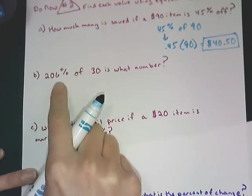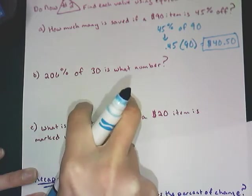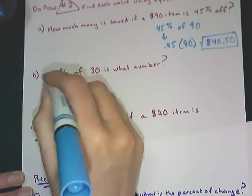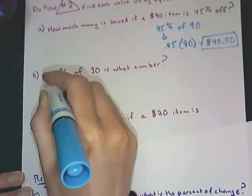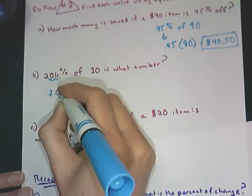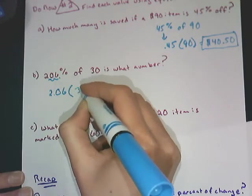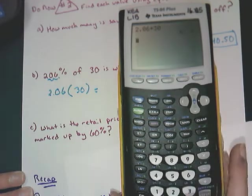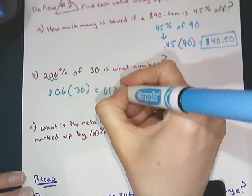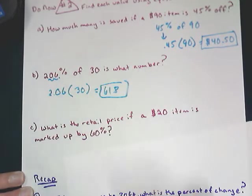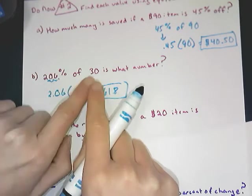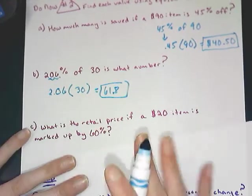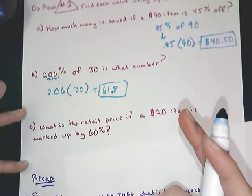The second one, 206% of 30 is what number? We could do the percent proportion, or we can literally just translate this. 206% is 206 divided by 100. If I move it over twice, the decimal equivalent is 2.06. Of means multiply, 30. If I find the product of those two numbers, you'll get 61.8. So 61.8 is 206% of 30, which makes sense. If I have 206% of a number, it's essentially doubling the number.